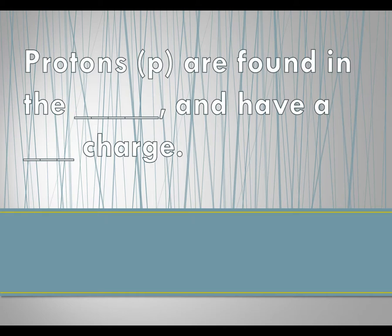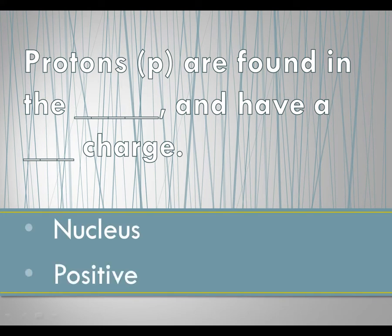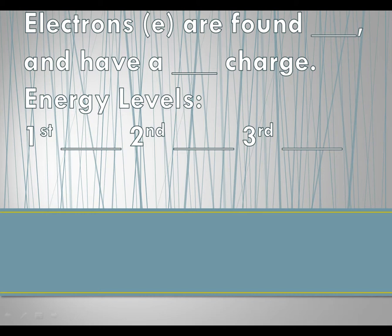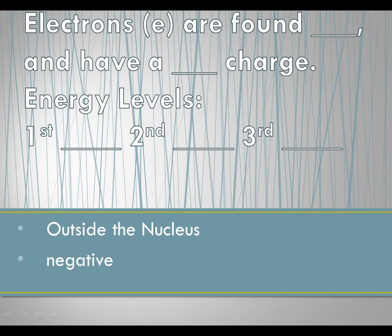Let's review a few concepts. Protons are going to be found in the nucleus and they have a positive charge. Neutrons are also found in the nucleus and they have a neutral charge. Electrons are found outside the nucleus and have a negative charge.